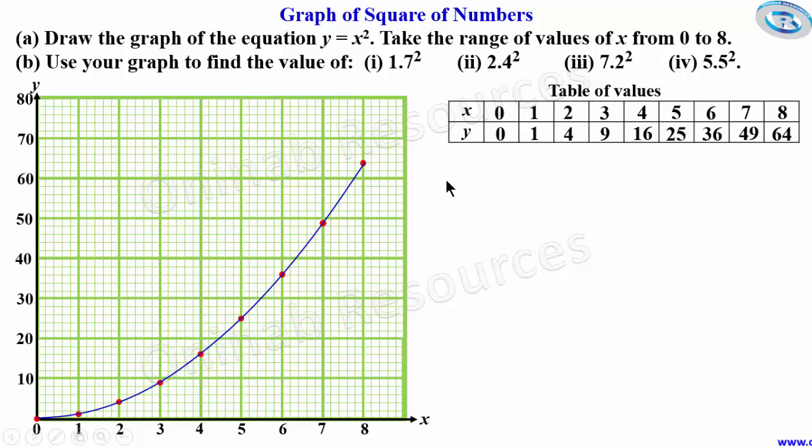We go to part (b). We have to use our graph to find the value of each of the following, starting from (i) 1.7². To find 1.7², we locate 1.7 on the x-axis. This is 1, 1.2, 1.4, 1.6, 1.8, and 2. So 1.7 is midway between 1.6 and 1.8.